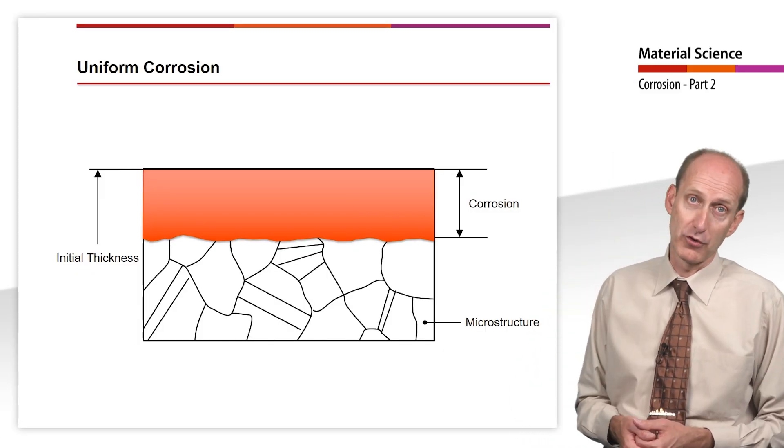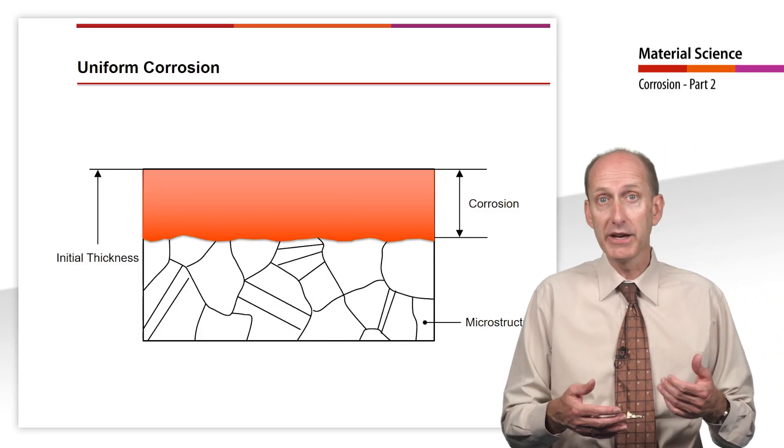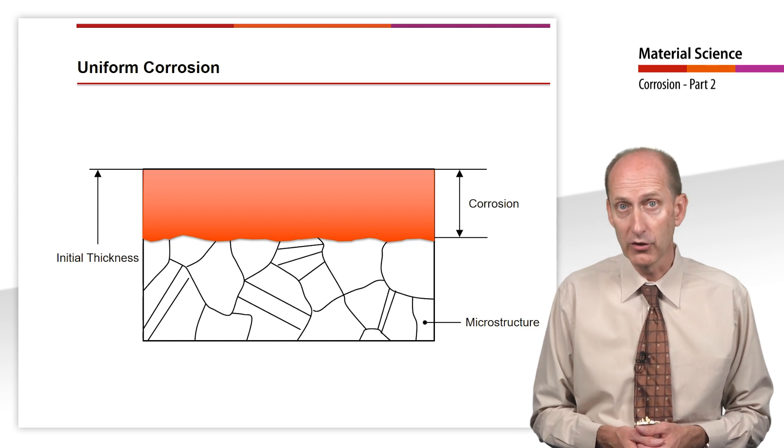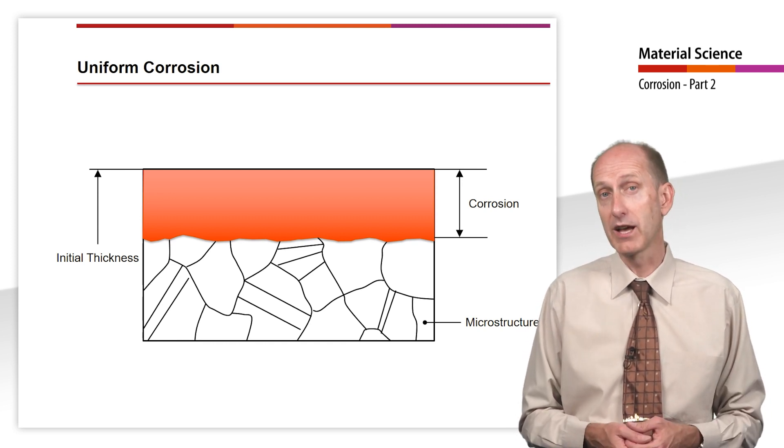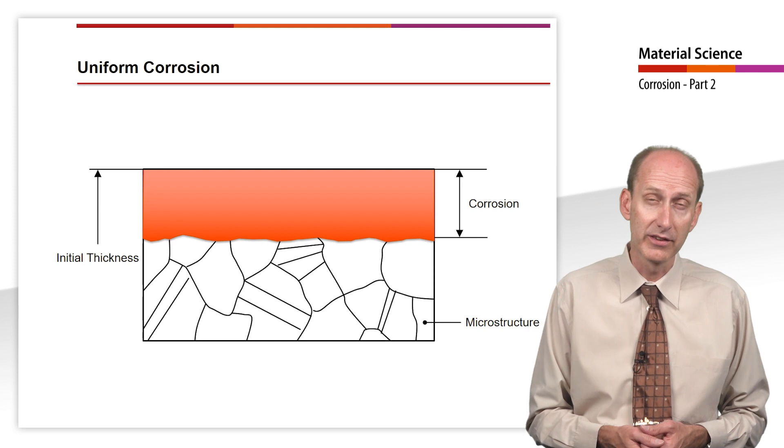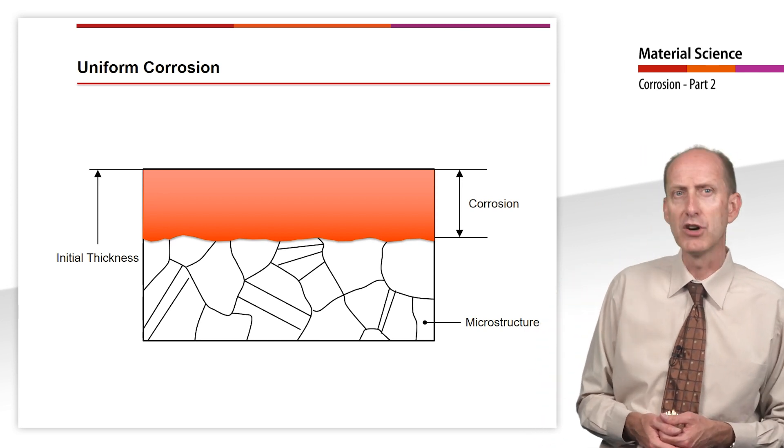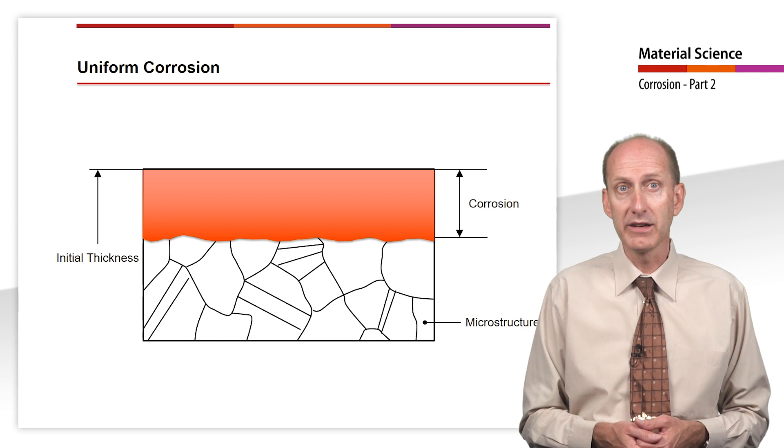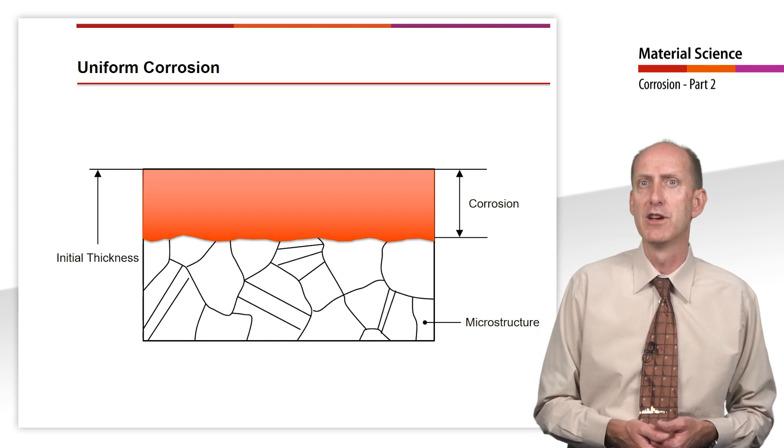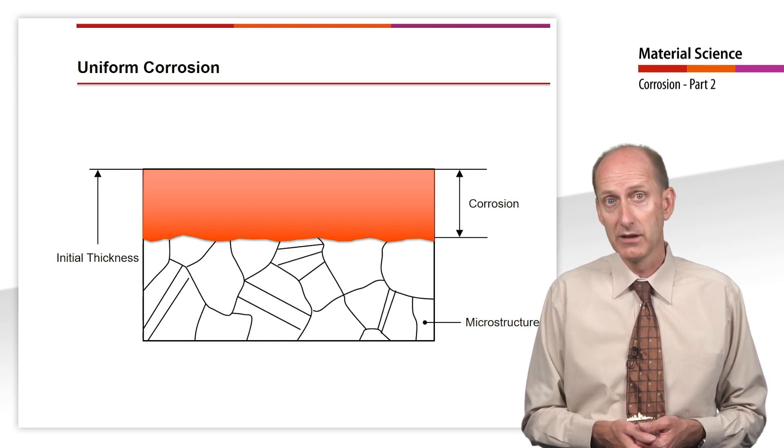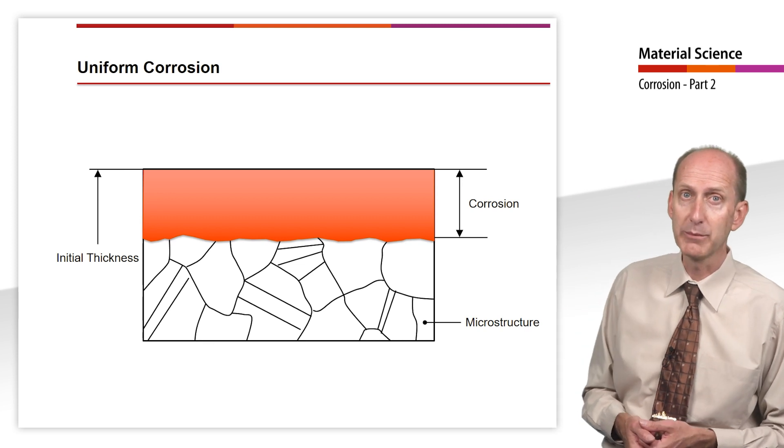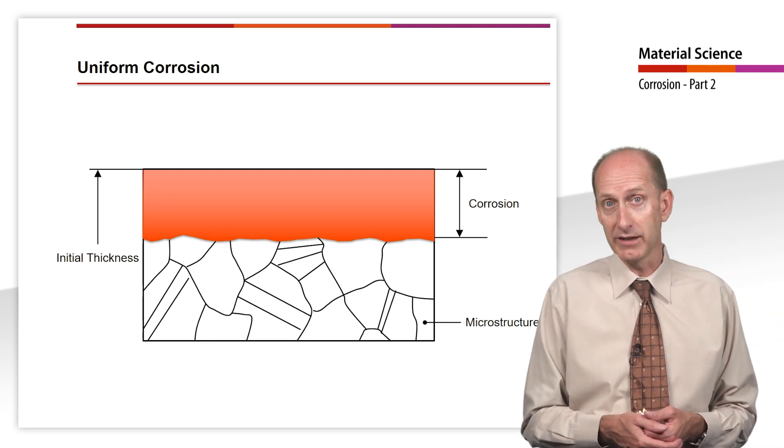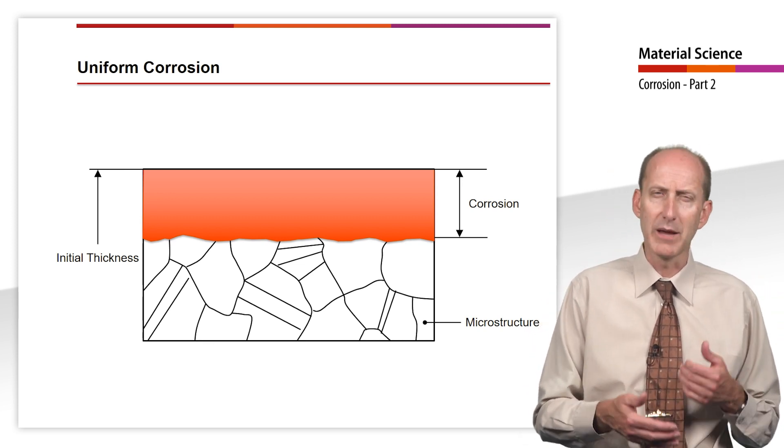We will start with uniform corrosion. If the appropriate resistance is not taken into account when selecting materials that come into contact with acids, considerable material erosion can occur. This figure schematically shows the damage pattern of this corrosion. If the corrosion behavior of metallic materials is not sufficiently taken into account, rapid damage can occur.